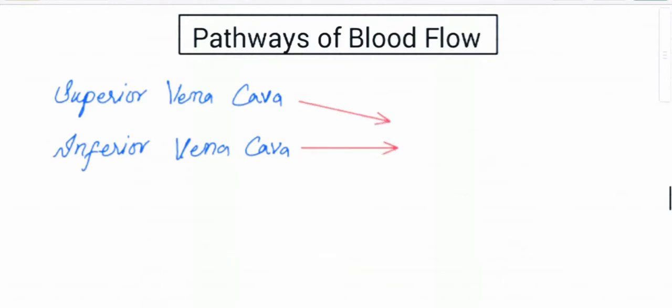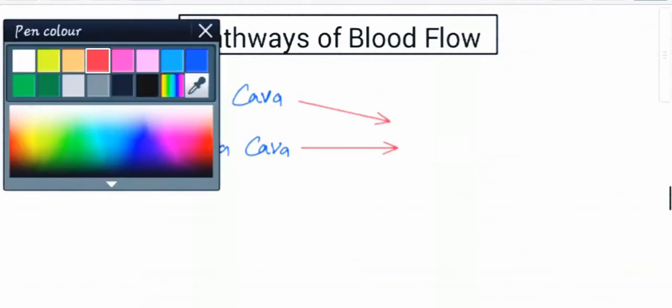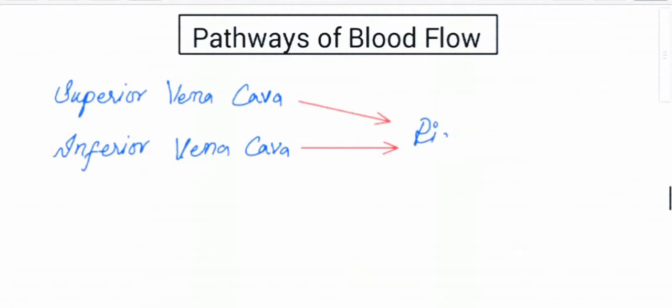Pathways of Blood Flow. Deoxygenated blood from head, shoulder and neck is brought by superior vena cava, and deoxygenated blood from the lower part of the body, abdomen, hips and legs is brought by inferior vena cava. They both open in right atrium.